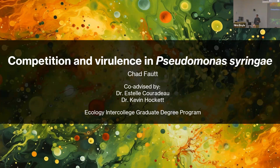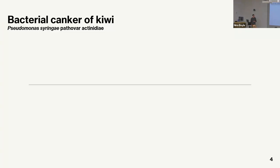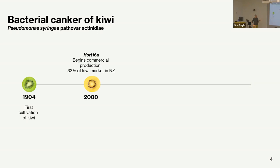The best way to start is by introducing Pseudomonas syringae as a plant pathogen and its relationship with kiwi. Kiwi is interesting because it was only cultivated in the early 20th century — first cultivation in 1904. For about 80 years we grew green kiwis. Around 2000, a company introduced a golden variety that was sweeter, less acidic, and very popular — it quickly became 33% of the kiwi market in New Zealand.